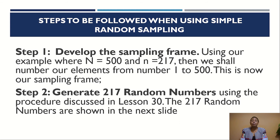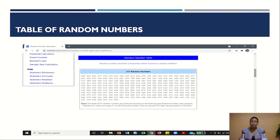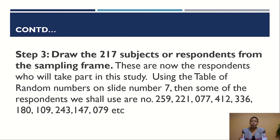Step 2 is to generate 217 random numbers using the procedure discussed in lesson 30. The next slide shows the 217 random numbers that have been generated — that is the table of random numbers. Step 3 is to now draw the 217 subjects or respondents from the sampling frame.